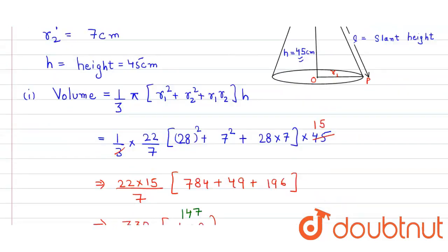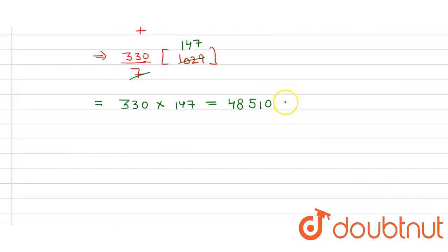So ultimately the answer will be 330 × 147, and when we multiply them we get 48,510, and here unit is centimeter cube. So in the second part...